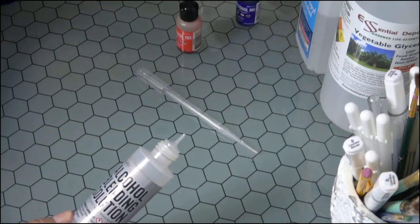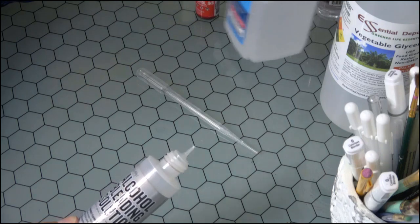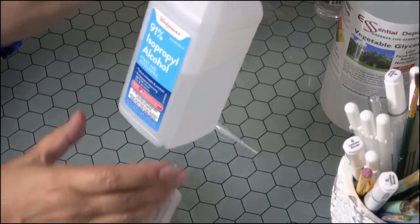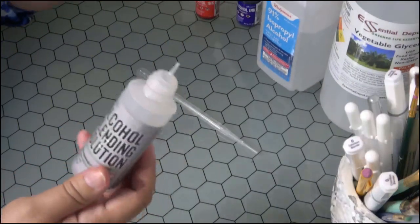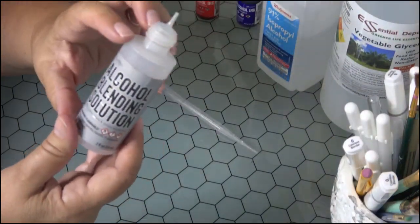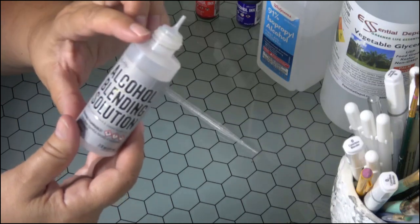We also know that 91% rubbing alcohol is a great source for moving your ink around, but the blending solution has a little bit different texture and a little bit different way of moving the ink.